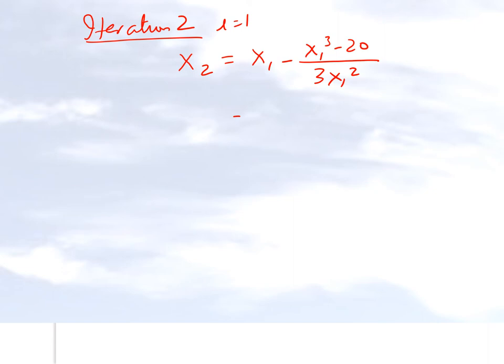So now it just becomes a matter of doing the correct substitutions. Because we just found out x1 is this quantity right here, 2.74074, we are just substituting that. And the number which I get here is 2.71467.